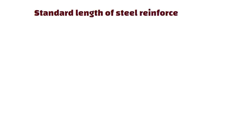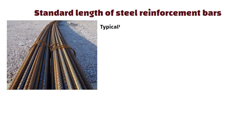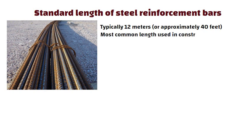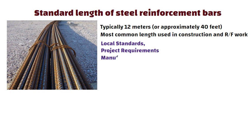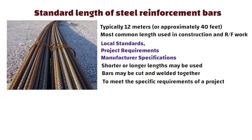Standard length of steel reinforcement bars. The standard length of steel reinforcement bars is typically 12 meters or approximately 40 feet. This is the most common length used in construction and reinforcement work. Though the length can vary depending on local standards, project requirements, and manufacturer specifications, shorter or longer lengths may be used, or bars may be cut and welded together to meet the specific requirements of a project. However, 12 meters is the conventional standard.